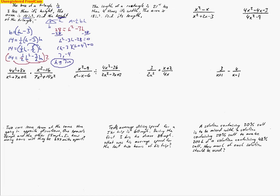Notice that this time they said find the height, but if they wanted the base, we'd have to substitute back in to find it. Let's take a look at the next problem. It says the length of a rectangle is 21 less than 4 times the width. We're going to do the same sort of thing as the last problem.